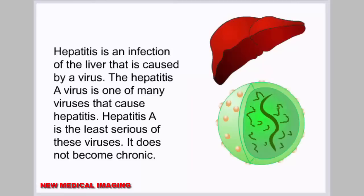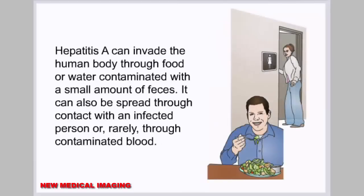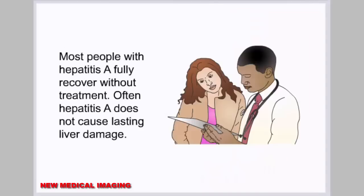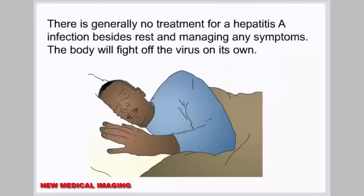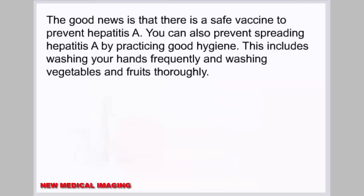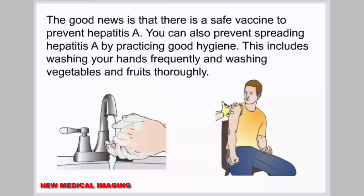In summary, hepatitis is a liver infection caused by a virus, and the hepatitis A virus is the least serious of the hepatitis viruses — it does not become chronic. Hepatitis A can spread through contaminated food or water, contact with an infected person, or rarely through contaminated blood. Most people fully recover without treatment, as the body fights off the virus on its own, and there is a safe vaccine and good hygiene practices that can prevent infection.